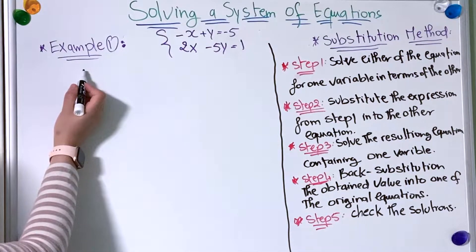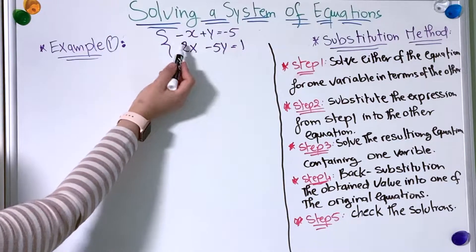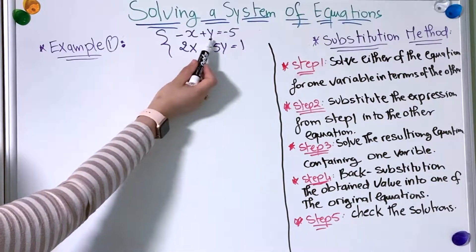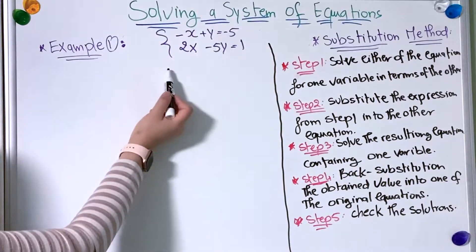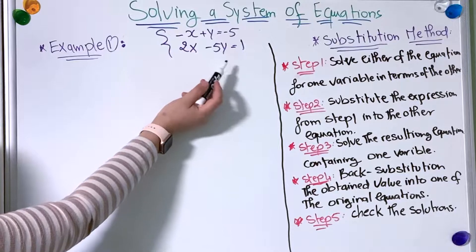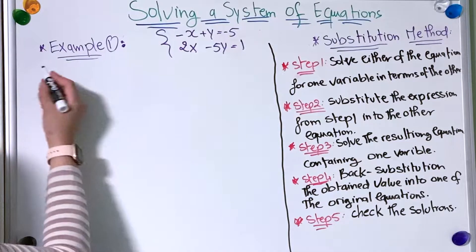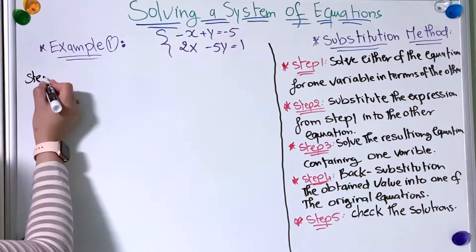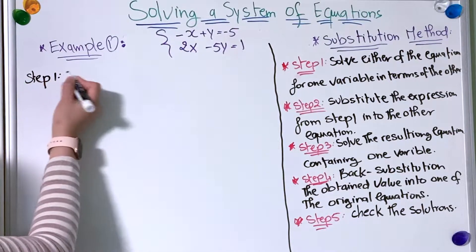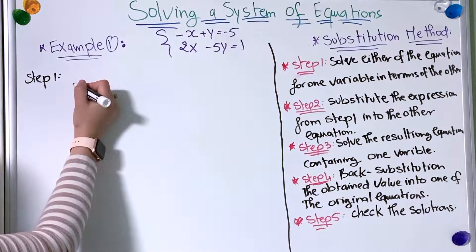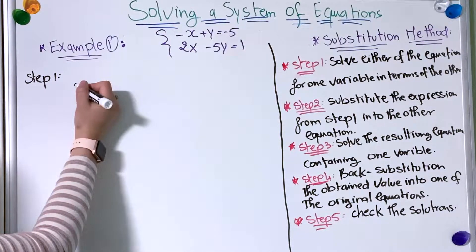Now let's move to the first example. We have the first equation: minus x plus y equals minus five, and the second equation: 2x minus 5y equals one. Let's start with the first step, where we're going to solve either of the equations for one variable in terms of the other.